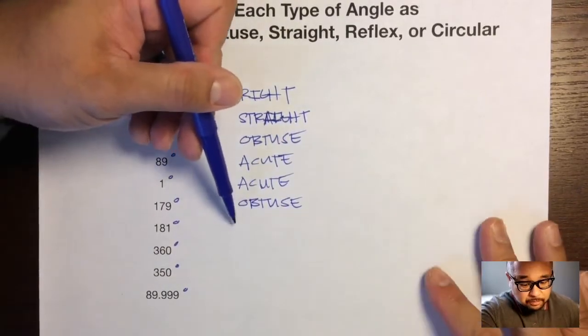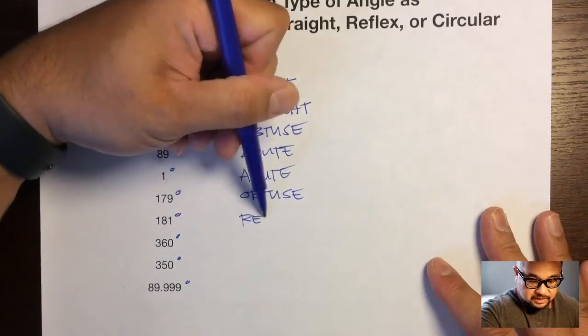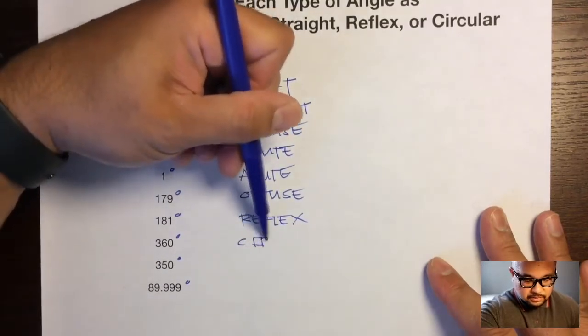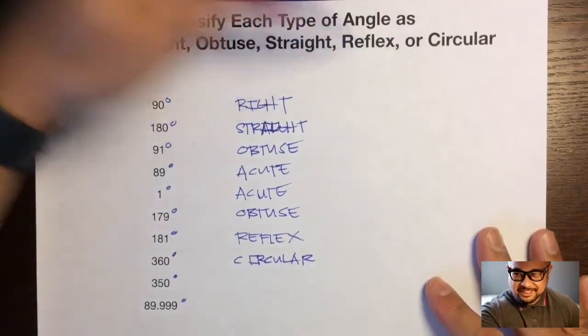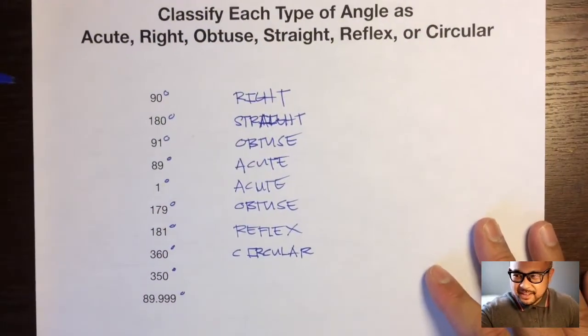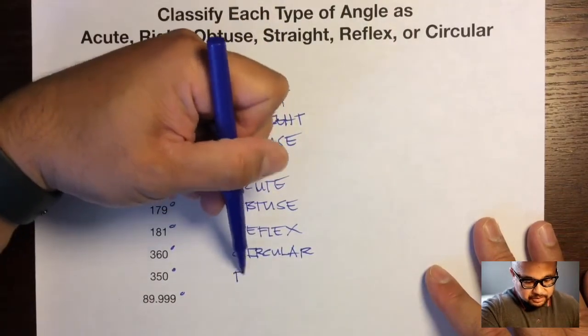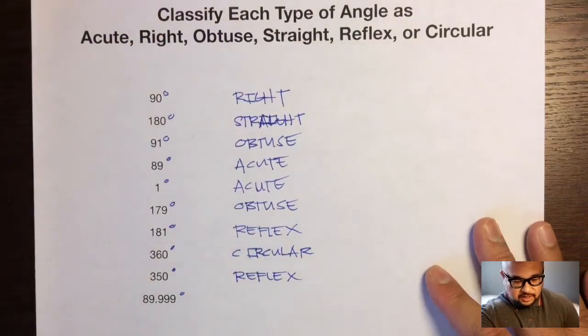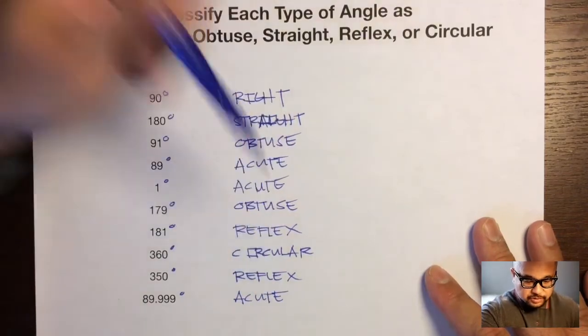181, that's more than 180 degrees, so that would be a reflex angle. 360 is that circular angle. 350 degrees, that's less than a circle, so that would be a reflex. Look at this, a decimal. 89.999, that's not quite 90. Close, but not quite. So that would be acute angle.